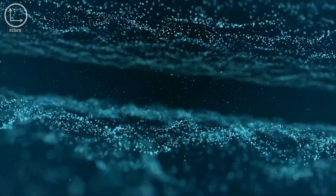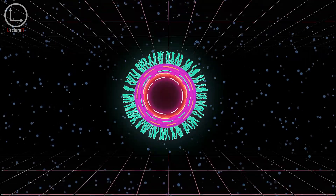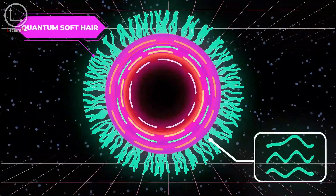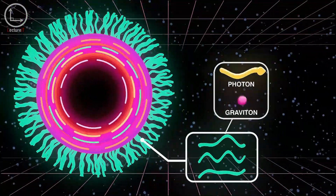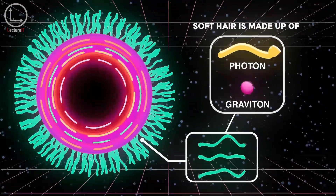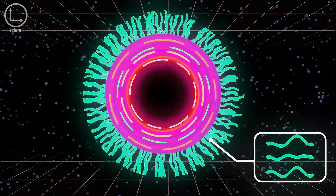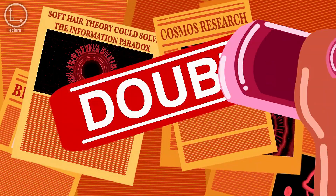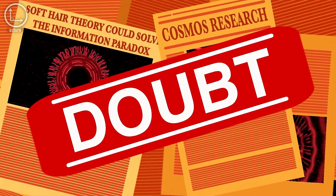Soft hair offers yet another tantalizing prospect for settling the debate. Soft hair describes faint ripples adorning the surface of black holes. Much like fingerprints uniquely identify individuals, these barely perceptible undulations supposedly contain enough distinctiveness to record the necessary information about fallen particles. Despite garnering significant attention, doubts persist concerning whether soft hair truly encodes sufficient detail to satisfy rigorous demands imposed by quantum mechanics.